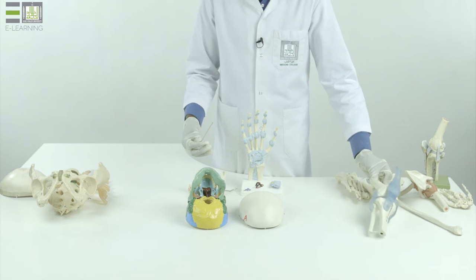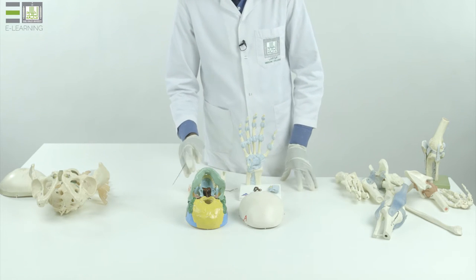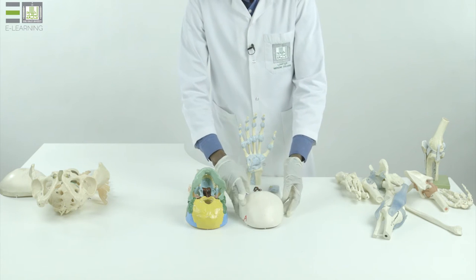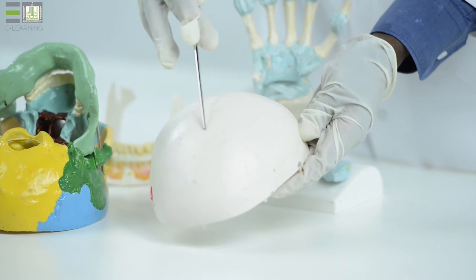We start with the more fixed type of joints, which are the fibrous joints. There is fibrous tissue present between the articulating bones.